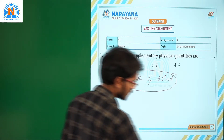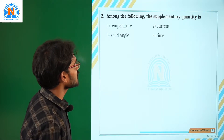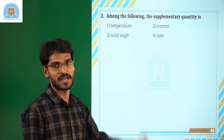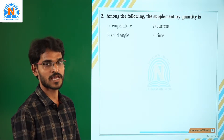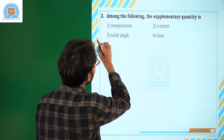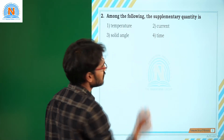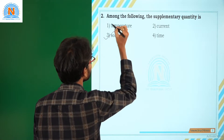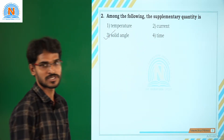Next, move to the next question. Among the following, the supplementary quantity is? As explained previously, there are two types of supplementary physical quantities: one is plane angle, other one is solid angle. Among the four options, temperature, electric current and time are called fundamental physical quantities, and solid angle is a supplementary physical quantity. The correct option for this question is 3.